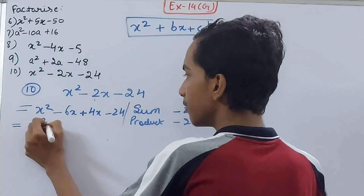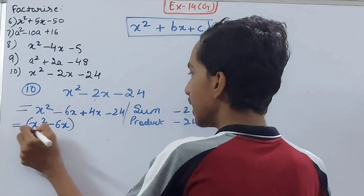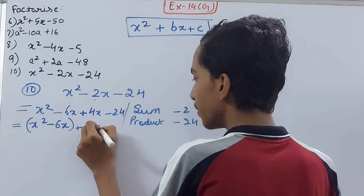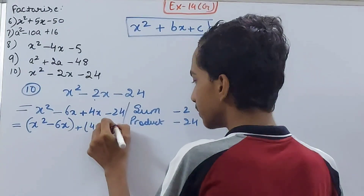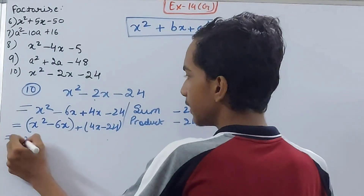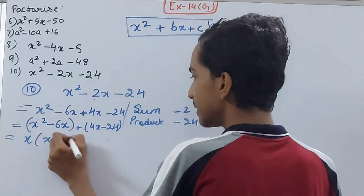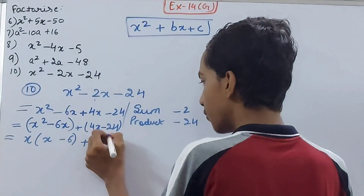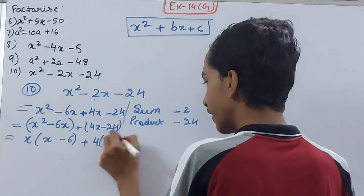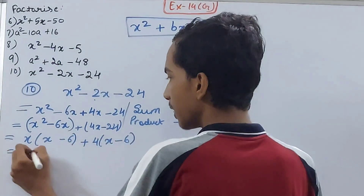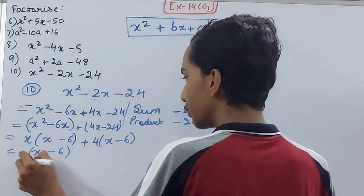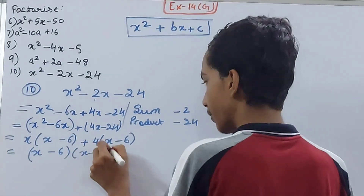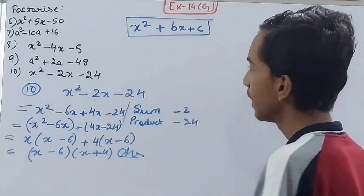Group: x squared minus 6x in one group, and 4x minus 24 in another group. Take x common to get x minus 6, and take 4 common to get x minus 6. Taking x minus 6 common from both groups gives the final answer: x minus 6 into x plus 4.